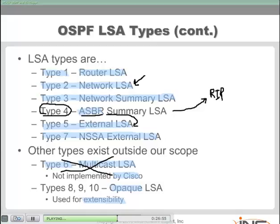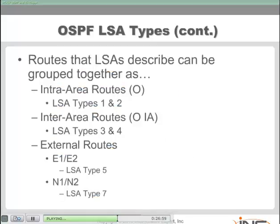These LSA types allow us to have this hierarchical structure. LSAs that only flow within an area are Types 1 and 2 — these are called our intra-area routes. Types 3 and 4 are used for inter-area routes — think interstate highway, crossing area boundaries. These are our Type 3 and Type 4s giving us inter-area routes. And then we have Type 5s which give us our external routes, and Type 7 if we have a not-so-stubby area.